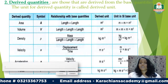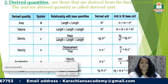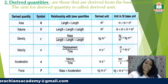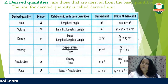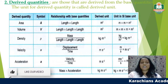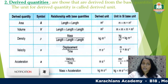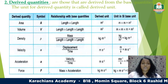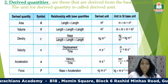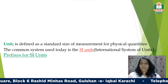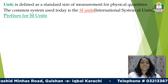Another example is force, which equals mass times acceleration. Mass is a base quantity and acceleration is a derived quantity, so the unit of force is kg·m/s². To make it easier, we have a special SI unit for force called Newtons, but writing kg·m/s² is also acceptable.